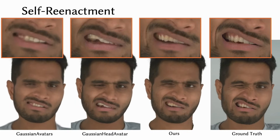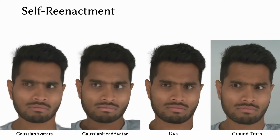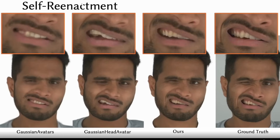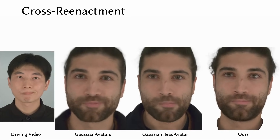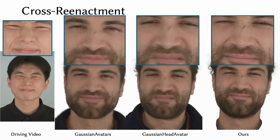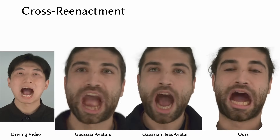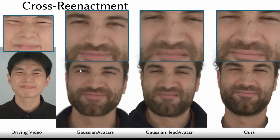They show experimental results starting with self-reenactment — using your own face to animate a digital avatar of yourself — comparing against two recent methods: Gaussian Avatars and Gaussian Head Avatar, all trained on 15 views. Their newer model is more realistic, more accurate, and higher quality. The opposite is cross-reenactment, which is using yourself to animate the avatar of a different person.